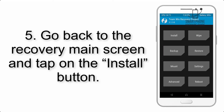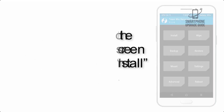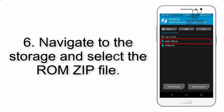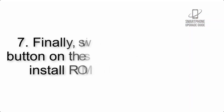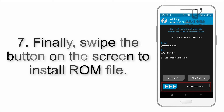Step 5: Go back to the recovery main screen and tap on the Install button. Step 6: Navigate to the storage and select the ROM zip file. Step 7: Finally, swipe the button on the screen to install the ROM file.